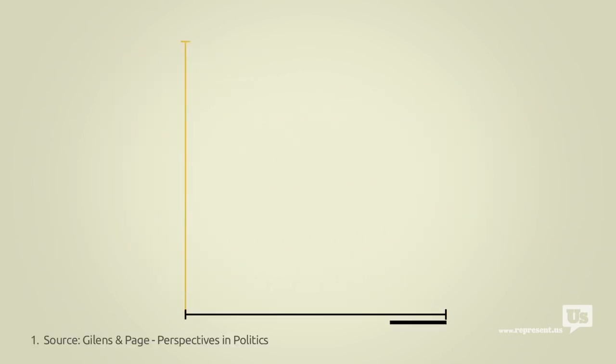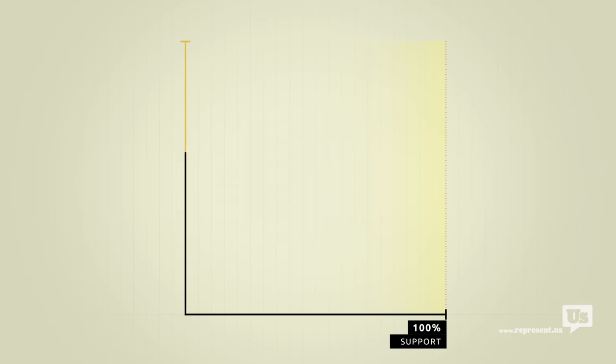This axis here represents public support for any given idea. On the left at 0% are ideas that not a single American wants. On the right at 100% are ideas that everyone supports. This axis represents the likelihood of Congress passing a law that reflects any of these ideas, from a 0 to a 100% chance.